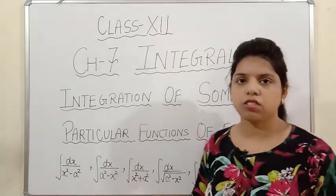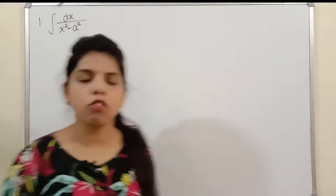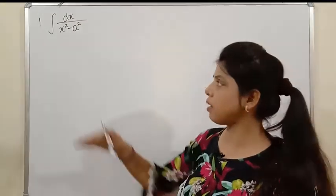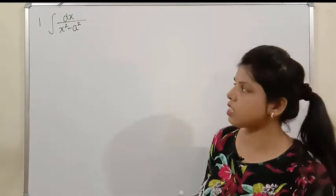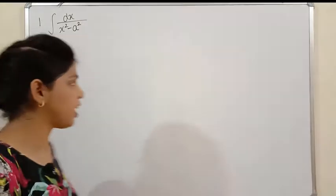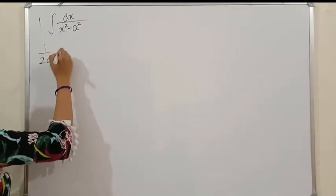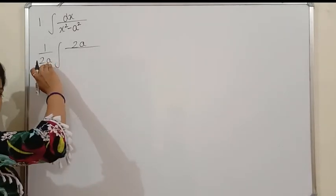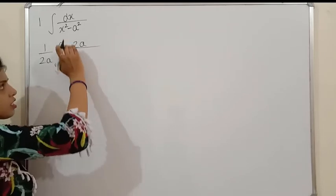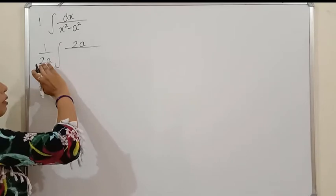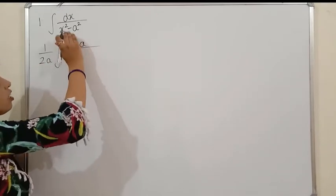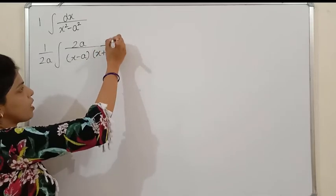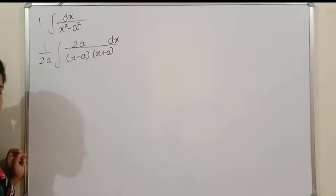Our first integration is ∫dx/(x²-a²). So far, wherever you had a function and its derivative appeared, you could use that method. But here, the derivative gives 2x, which you don't have and cannot create. So there is a different technique. To make the question easier, multiply and divide by 2a — since it's a constant, it can go outside. Then factor x²-a² as (x-a)(x+a) using the formula a²-b² = (a-b)(a+b).